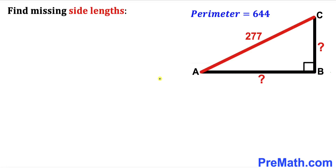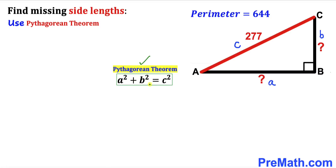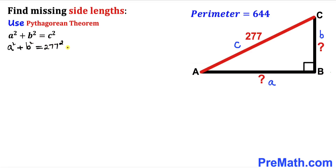Let me go ahead and label the side lengths of this triangle. I'm going to call this hypotenuse as side lowercase c, this side lowercase a, and this side lowercase b. Now we are going to use the Pythagorean theorem: a squared plus b squared equals c squared. Filling in the blanks, we get a squared plus b squared equals 277 squared. Let me label this as equation number one.